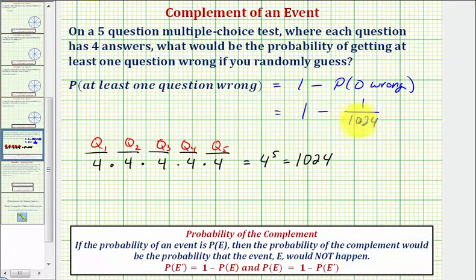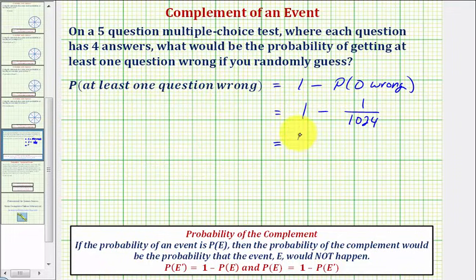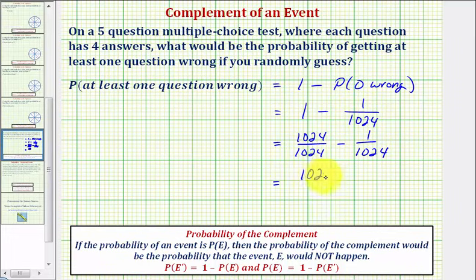So now if we find this difference, we can find the probability of getting at least one question wrong. Well one is equal to 1,024 over 1,024, and then we have minus one over 1,024. We have a common denominator, so we subtract the numerators. Our probability is 1,023 divided by 1,024. So notice how the probability is extremely high of randomly guessing and getting at least one question wrong.